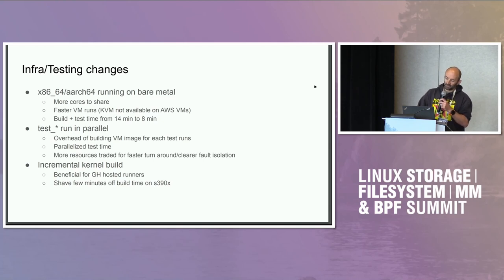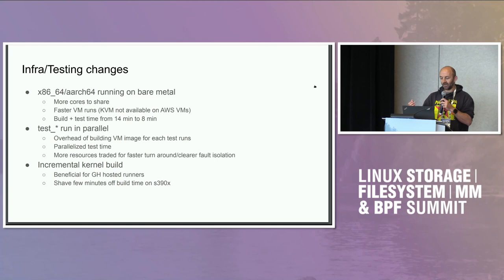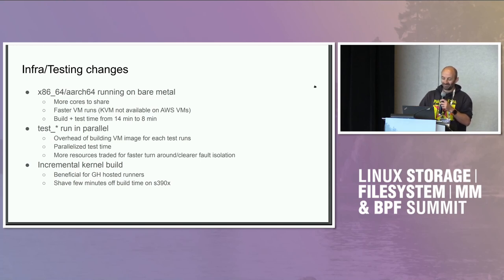We moved from running x64 in the VM to bare metal. One of the main reasons was it's faster, but it's much, much faster for ARM64 especially. One issue is AWS doesn't present KVM — they don't do nested virtualization. Running the ARM64 VM test in an ARM VM was taking about two hours. With KVM, it takes about four minutes.